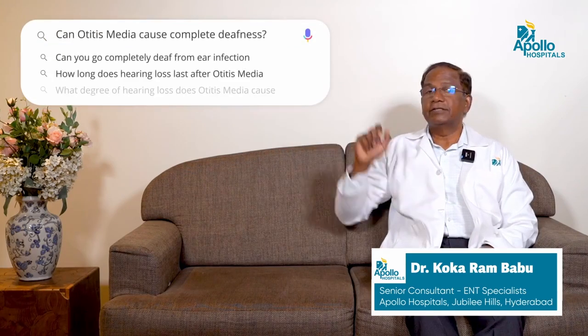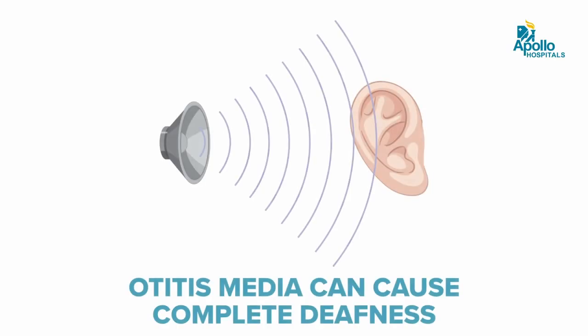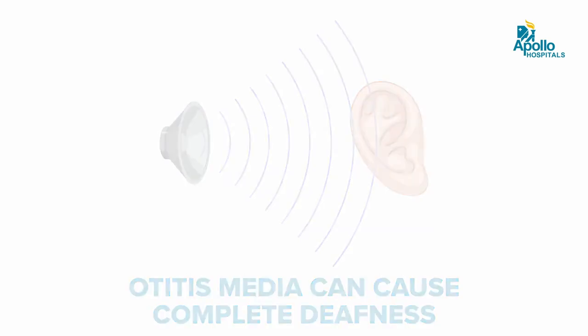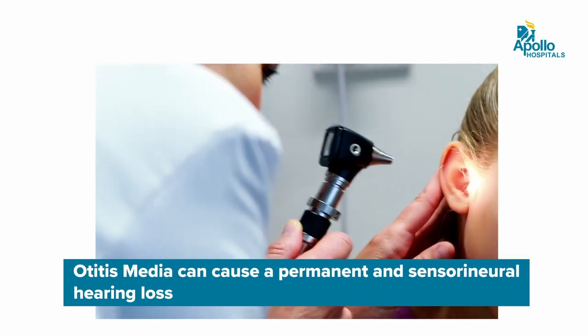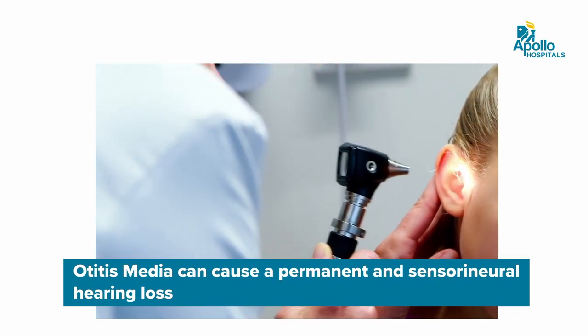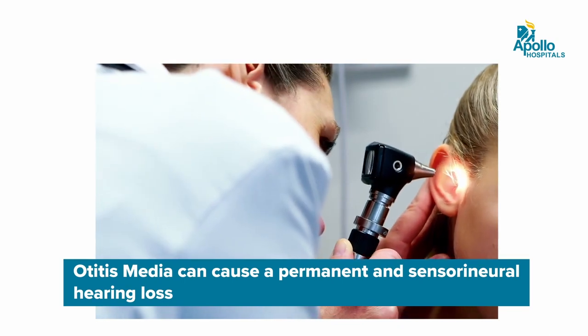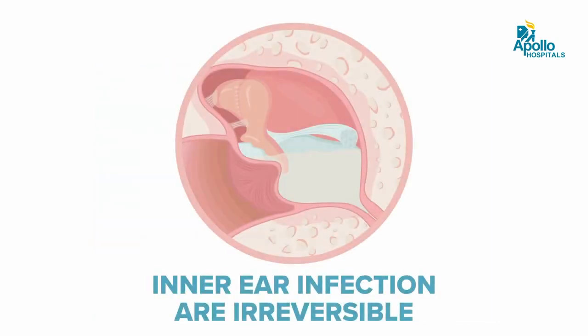Can Otitis Media cause complete deafness? Otitis Media can cause complete deafness sometimes, though the percentage is very low. When the infection is severe or the toxicity is high, it can spread from the middle ear into the inner ear, causing inner ear damage. Inner ear infections are usually irreversible. So sometimes one attack of Otitis Media can lead to complete deafness, though it is very rare — but it can still happen.